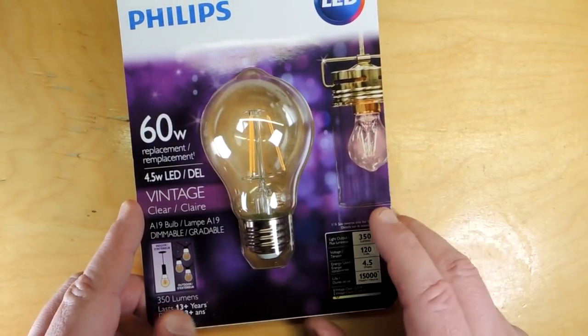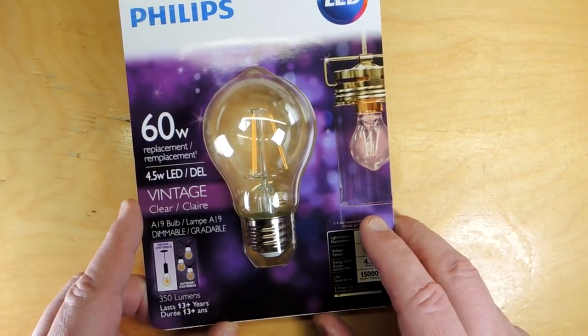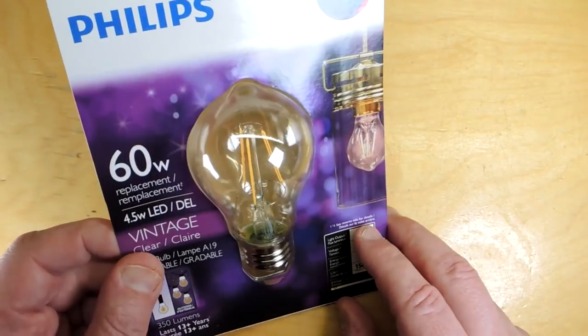The bulb temperature is 2200 Kelvin. That's a very golden color. Let's tear it apart.